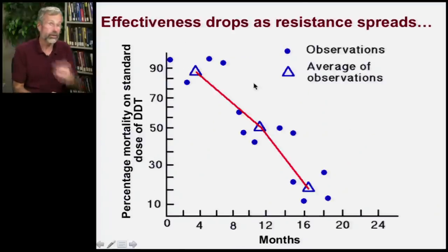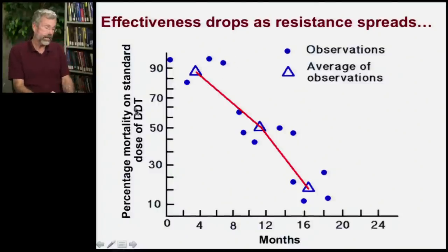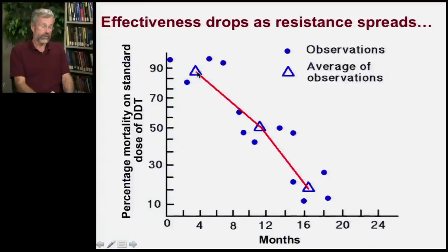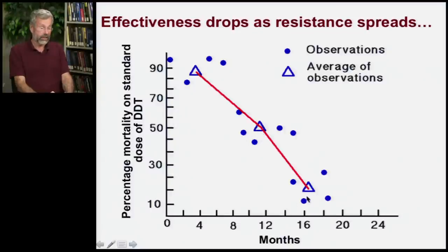So if we look through time, here we have percentage mortality on a standard dose of DDT. In the first few months it's great — you kill off most of the insects, 90%. But for that same dosage, after less than a year, now you're only killing off half, and in less than a year and a half, you're killing off only about a quarter of the insects.